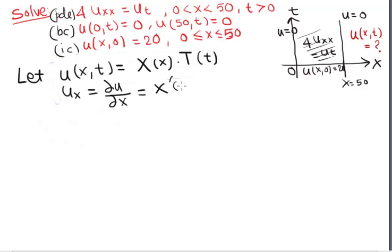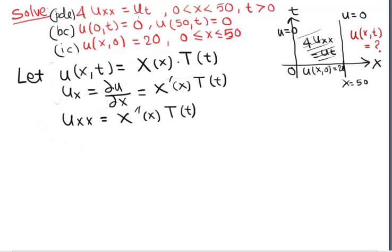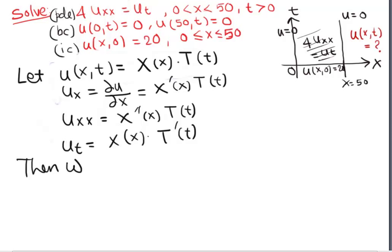To plug into the PDE, we find u_xx = X''(x)·T(t) and u_t = X(x)·T'(t). Substituting into the PDE gives 4·X''·T = X·T'. Now we separate variables by dividing both sides by 4·X·T.